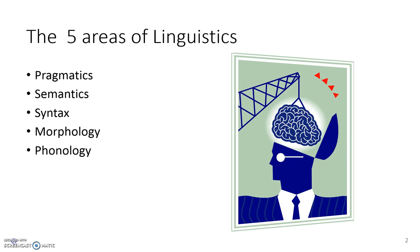Semantics on the other hand looks at what language means. Not just what individual words mean, although it does look at that, but also what do sentences mean? What does discourse mean in practice? Why is it that when I tell my friend 'you're so stupid' with a laugh that means something really different than when a mean teacher tells a kid 'you're so stupid' without a laugh? How is the meaning constructed in a different way?